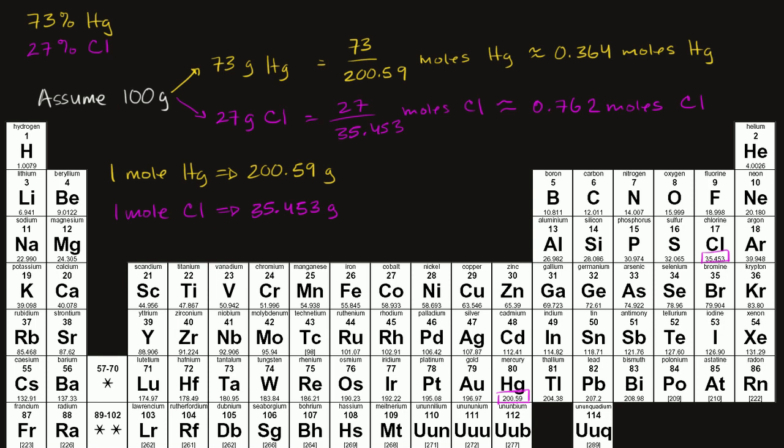so likely for every mercury, you have two chlorines. So based on these measurements right over here, it's very likely that you have mercury two chloride.